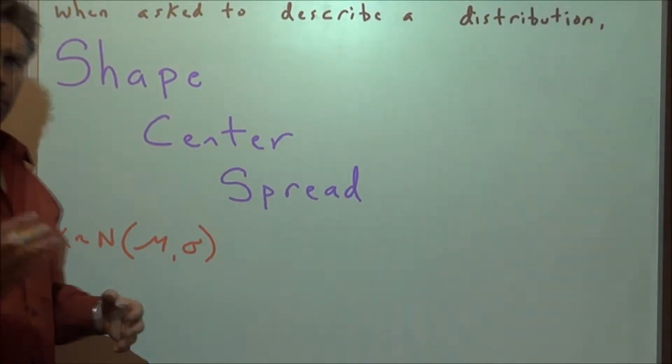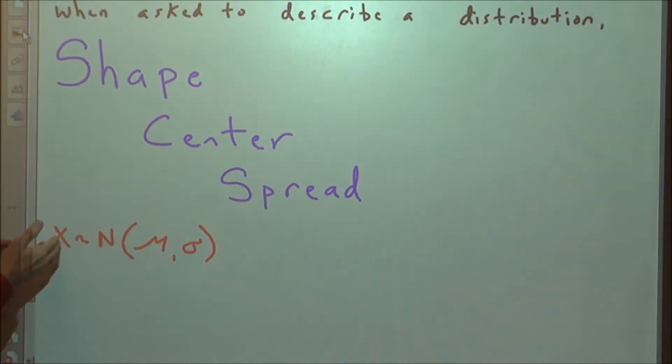When asked to describe a distribution, we do it three ways: shape, center, and spread. That's why if X is distributed normally, there's the shape, there's the center, there's the spread.